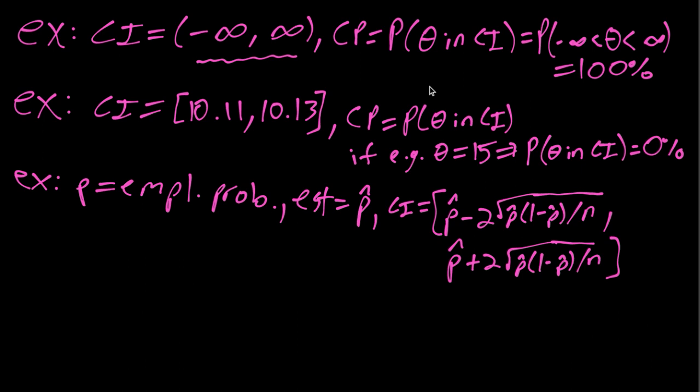So this has the form p hat minus something, p hat plus something, and so the first thing we'll notice is that this one at least passes the initial sanity check, that it is using the data through the sample proportion p hat. So this confidence interval will have different values in different data sets, unlike the previous two silly examples.